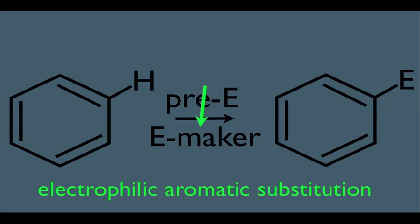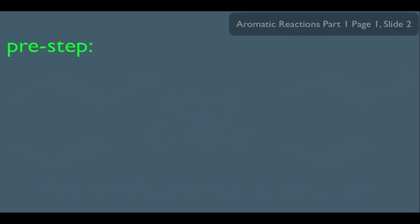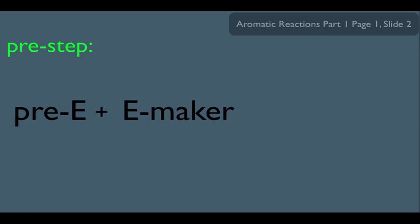The first step is the pre-step: the pre-electrophile reacts with the electrophile maker. In general, the electrophile maker converts the pre-electrophile into a full-fledged, positively charged electrophile — simply making it more electrophilic, more unstable, and therefore more reactive.